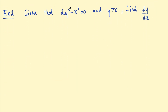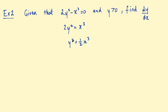Second example: given that 2y squared minus x cubed equals zero, and y is greater than zero, find dy/dx. We don't have it written as f of x equals something, so we need to rearrange it first. Add x cubed to both sides: 2y squared equals x cubed. Then divide by 2: y squared equals a half x cubed. Now we can take the square root, because we know y must be greater than zero as stated in the question, so we don't have to worry about the negative solution. Taking the square root of both sides gives y equals one over the square root of 2 times x to the power of three on two — another way of writing the square root of x cubed.